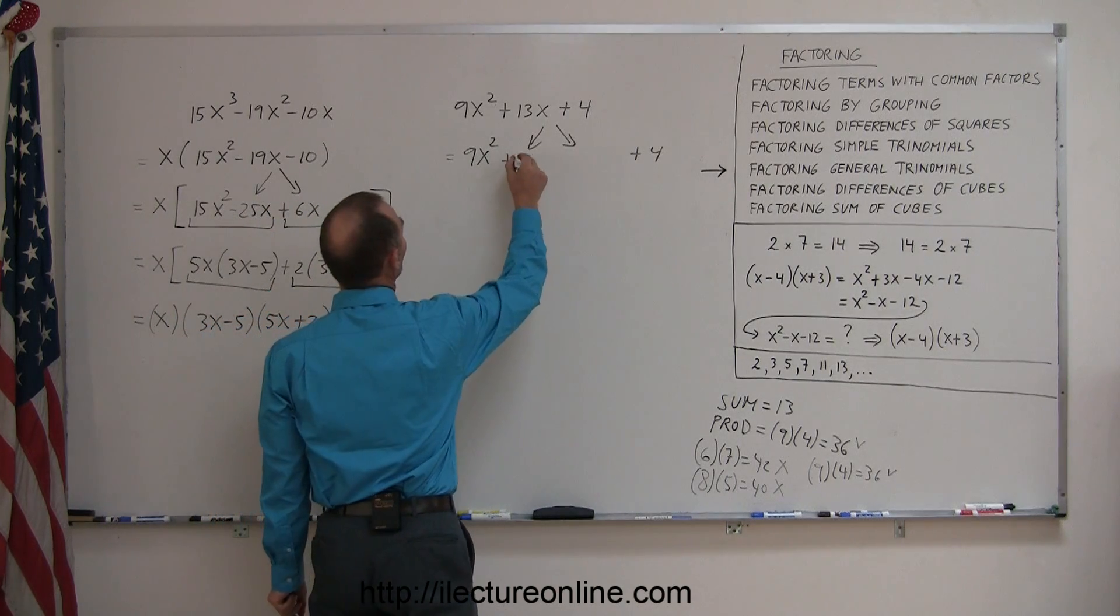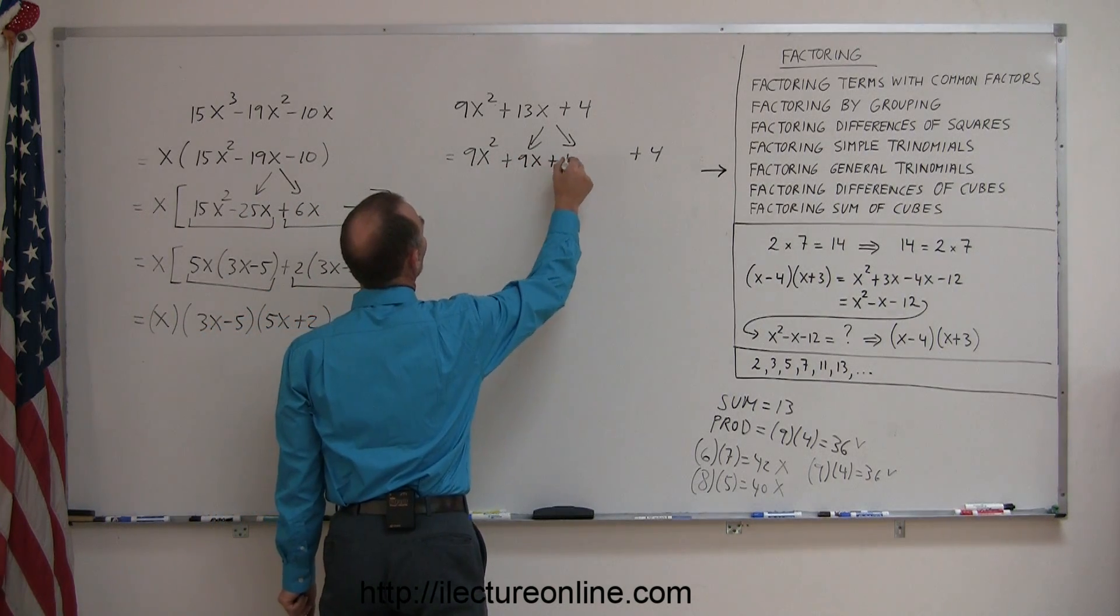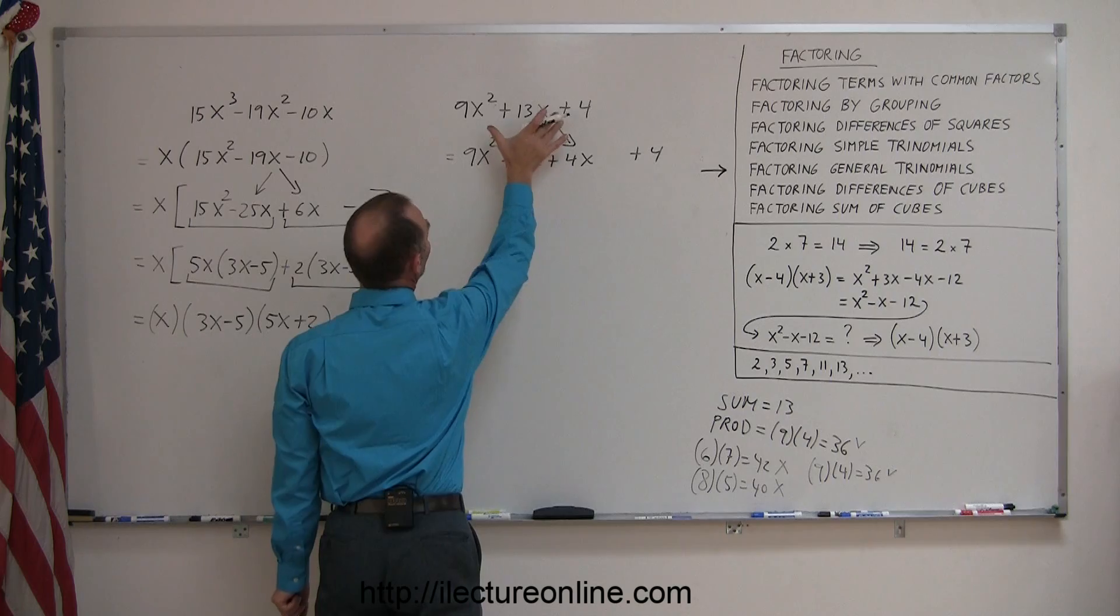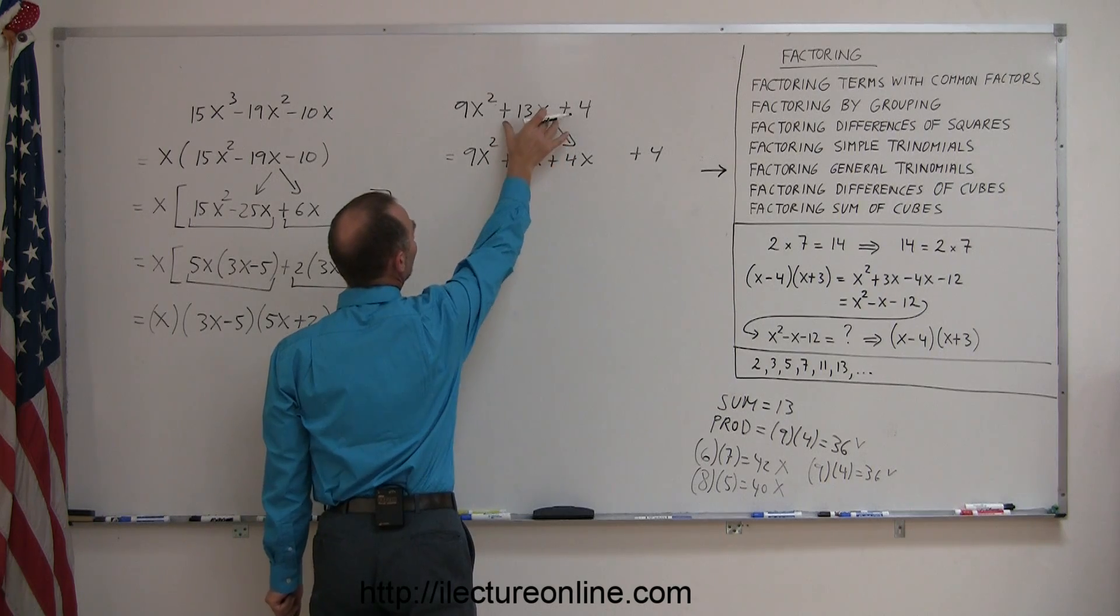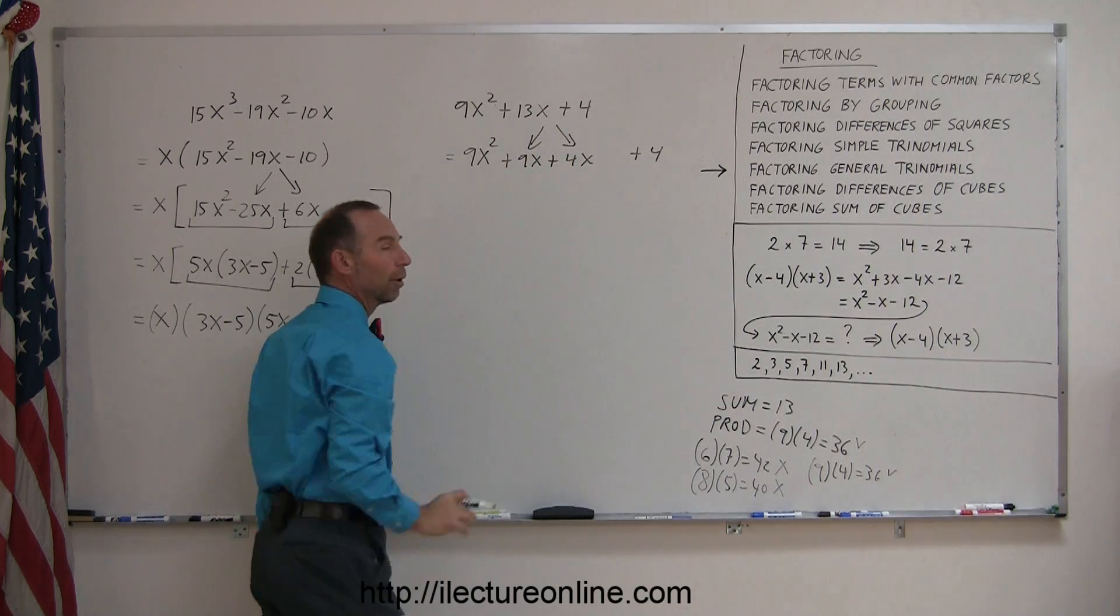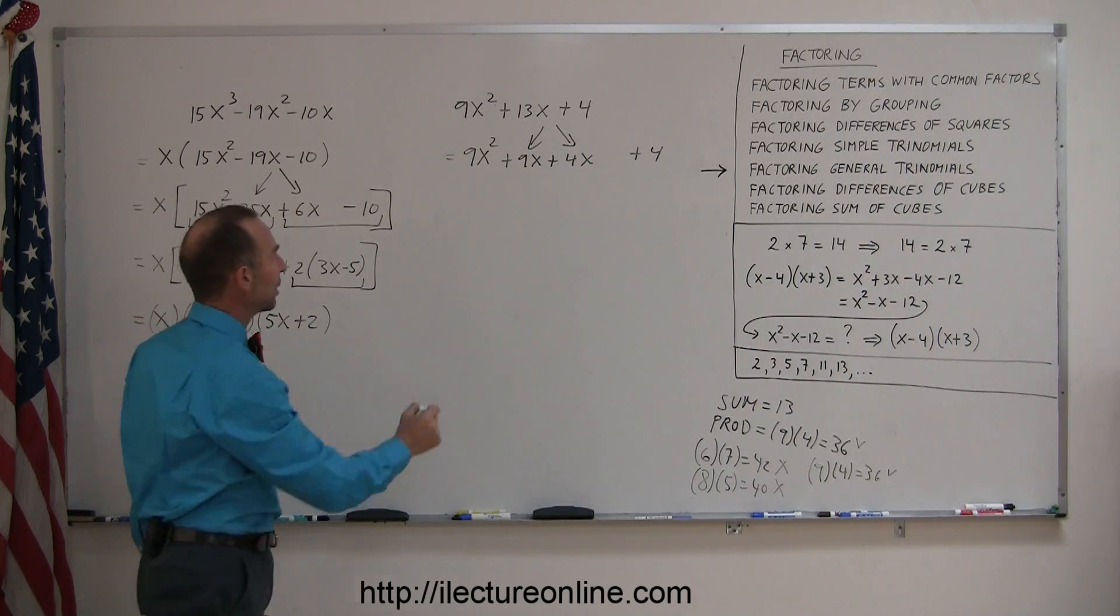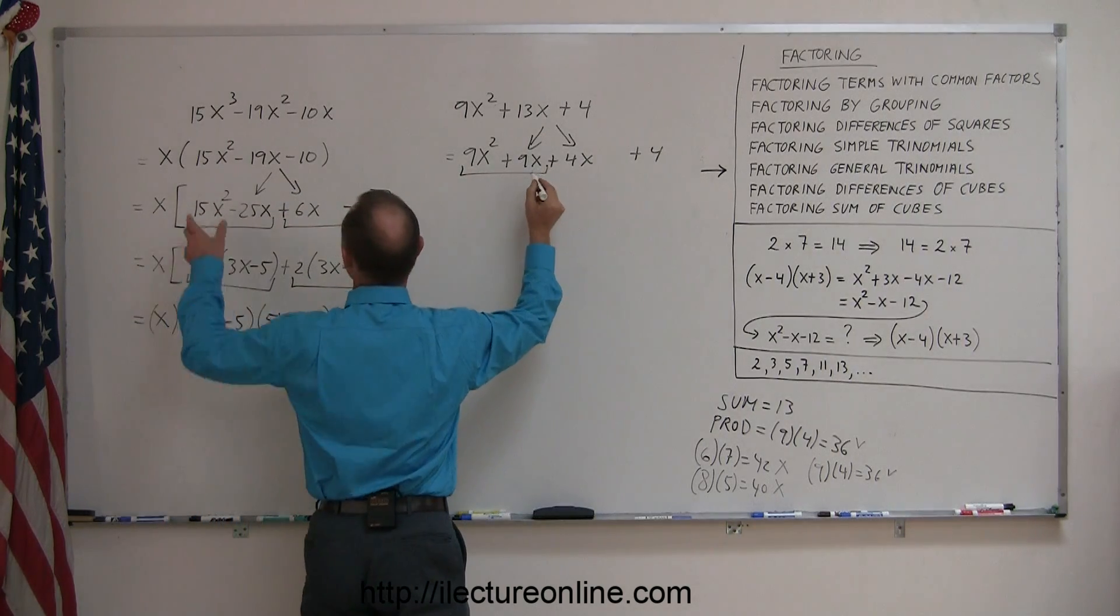So you plug those in here, plus 9x and plus 4x. So again, we have the same written down, but instead of 13x, we write it as a sum of two terms. Now we group them together, just like we did over here.